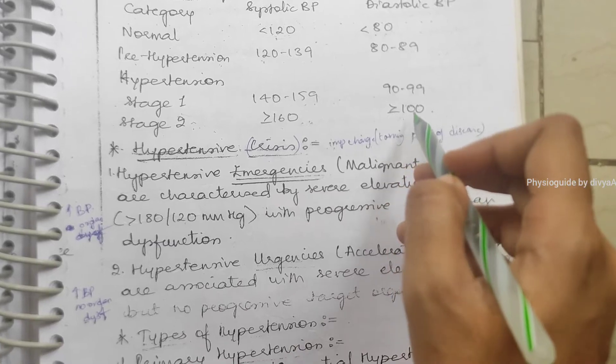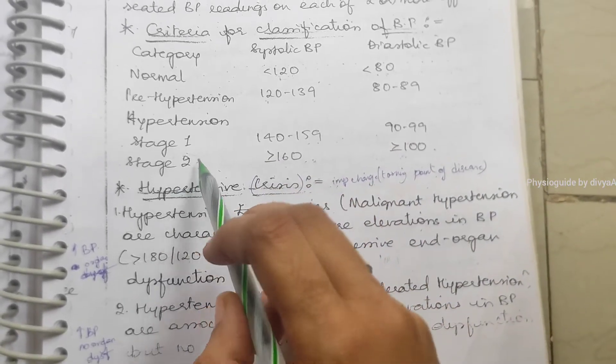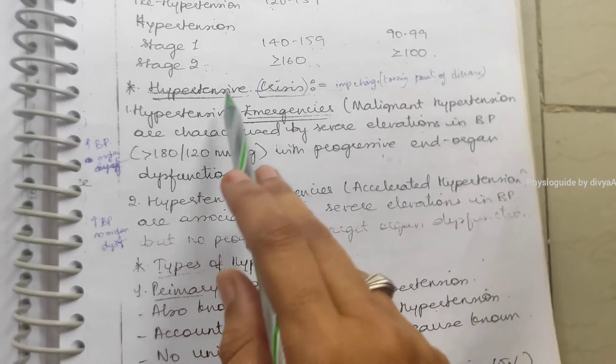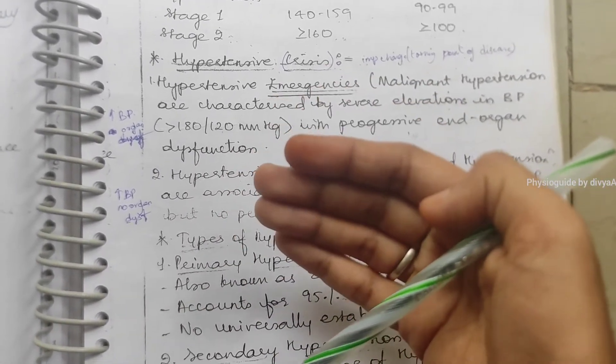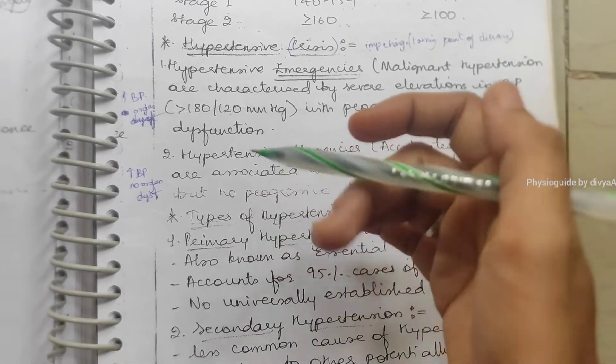Now what is hypertension crisis? What are the important changes we can see in this hypertension turning point of disease? It is divided into hypertension emergencies and hypertension urgencies.